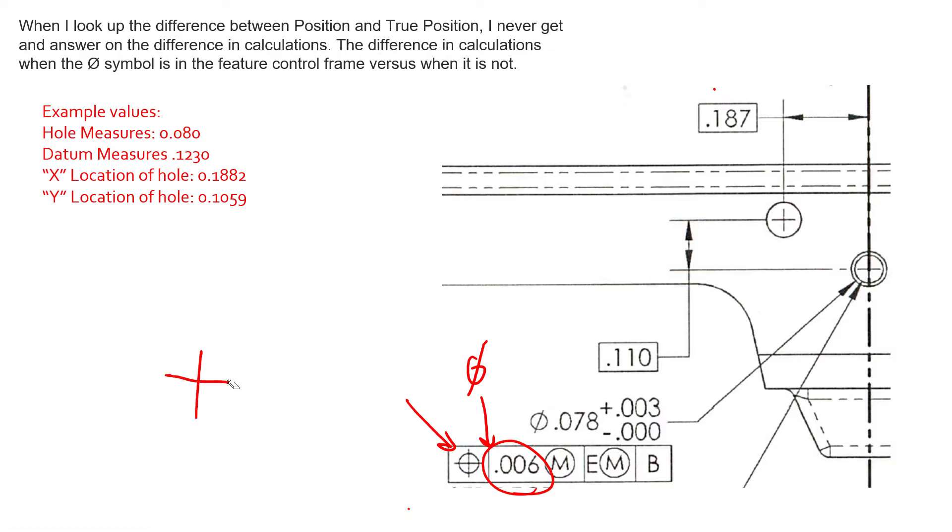So if we have the true position identified on the drawing using basic dimensions, we know this is where the true position should be, 0.187 and 0.110 in x and y respectively. We know the hole is not going to probably measure at that location, but it definitely is going to have some deviation away from true position. And so we're given those example measurements,